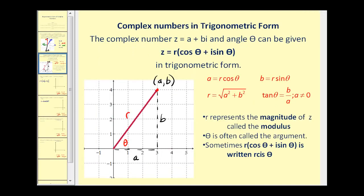Let's talk about complex numbers in trig form. The complex number A plus Bi at angle theta can be written as Z equals R times the quantity cosine theta plus i sine theta — this is the trig form of a complex number. A graph comparing rectangular versus trig form shows the point (A, B) can also be identified using R and theta, where R is the magnitude of the vector and theta is the angle it forms with the real axis. This is similar to converting rectangular to polar coordinates, except we use A and B instead of X and Y.